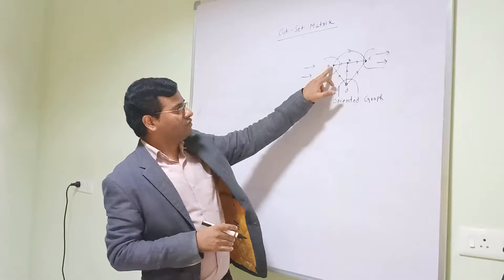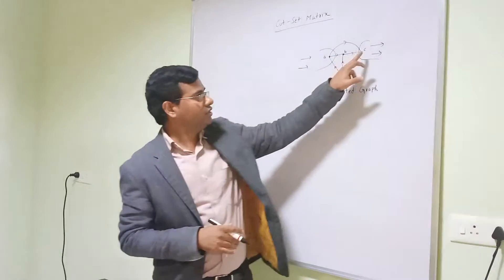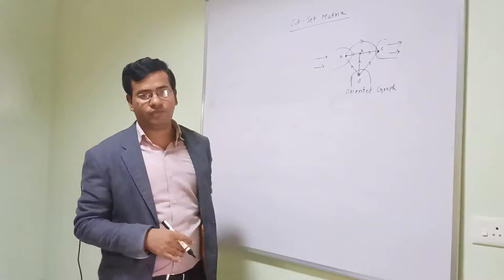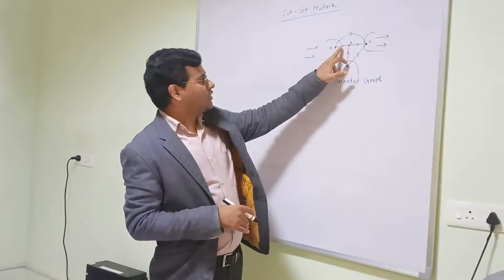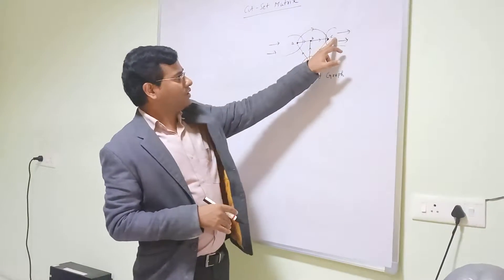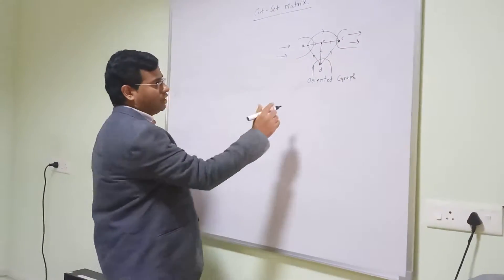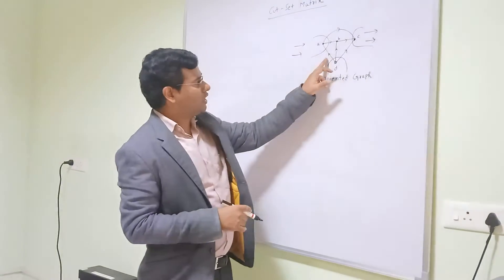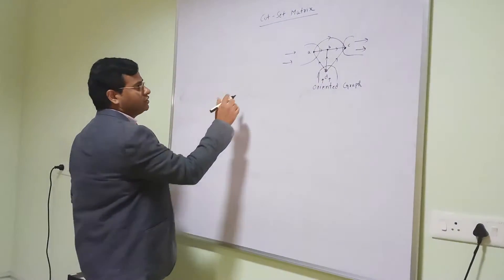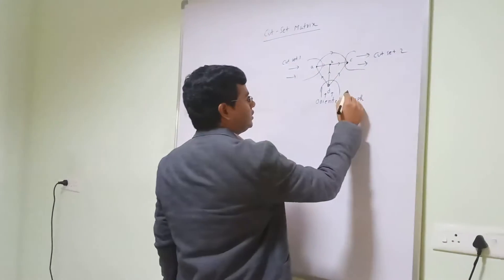First we take a node and cut it. That gives us one cut set; similarly that is the second cut set and that is the third cut set. Now here I have found out the direction of the cut-set matrix. The cut set direction is in this direction. Similarly, we found out another cut set whose direction is also the same as that branch direction. All the branch directions are in the upward direction, so all the cut sets are in the upward direction. This cut set is cut set 1, this is cut set 2, and this is cut set 3.